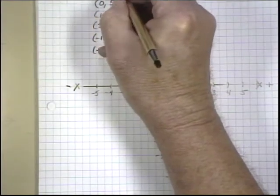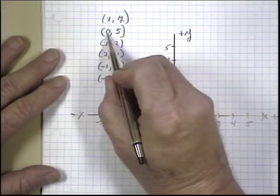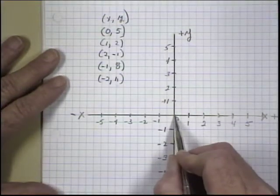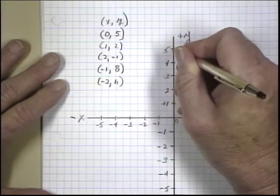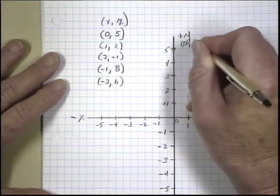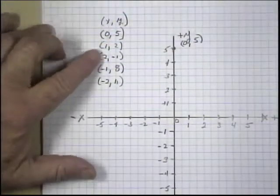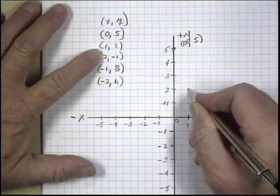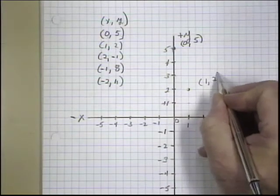Now to graph our ordered pairs, remember the first number is our x value, the second number is our y value. x first, y second. So our first number is x is 0 and y is 5. So we find on the x-axis our 0, which is right here. And on our y-axis, 5, which is up here. So this is the point for (0, 5), right here on the axis. Now our x is 1, which is here. And our y is 2, right here. So this is our second point, and that point is (1, 2).